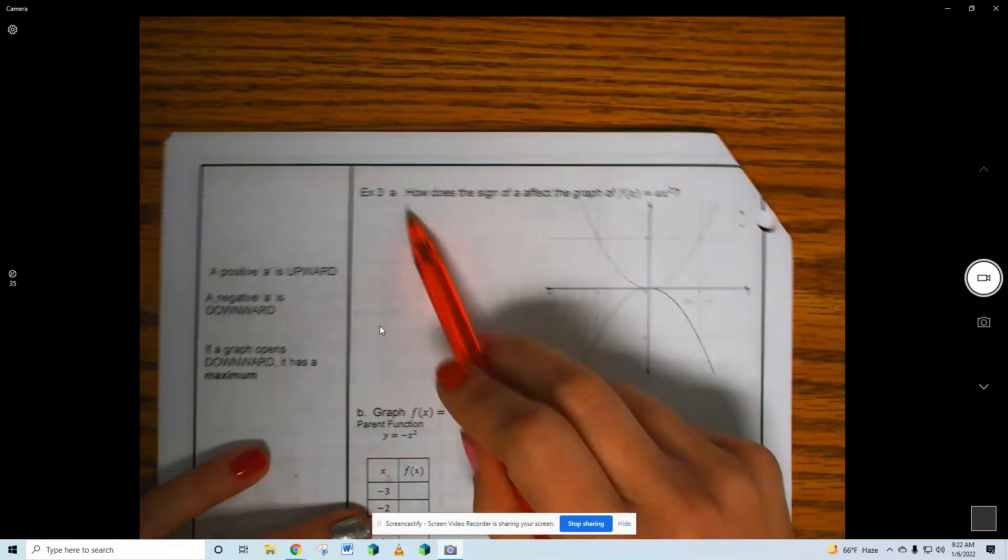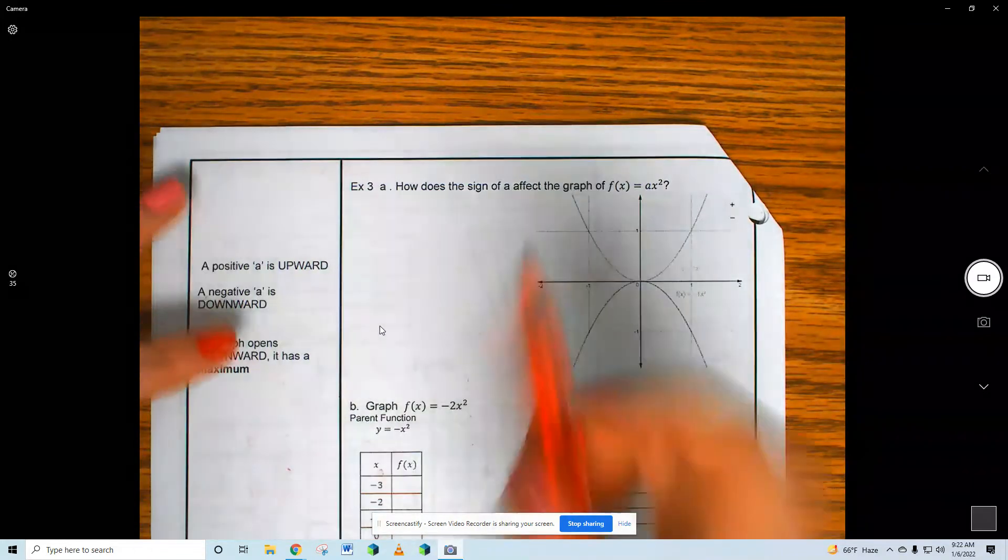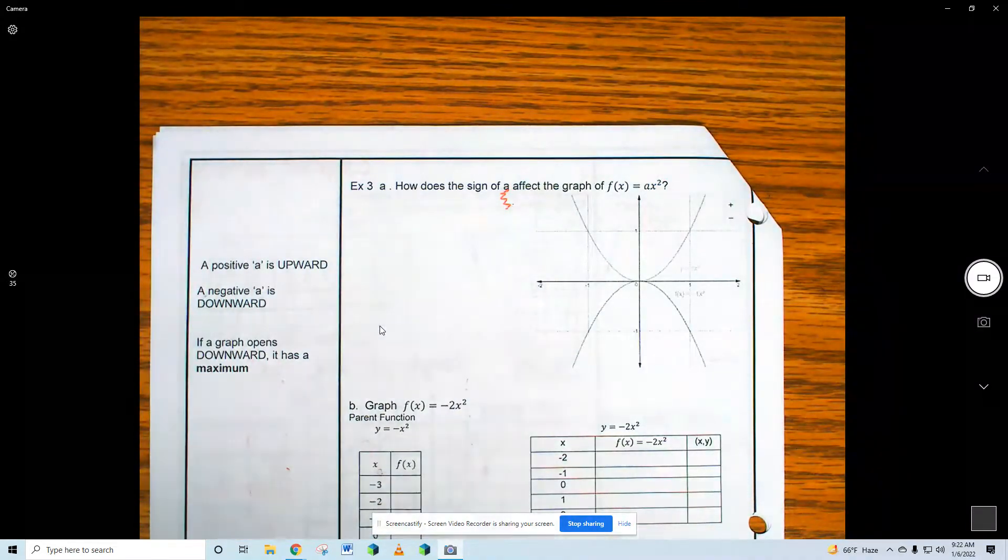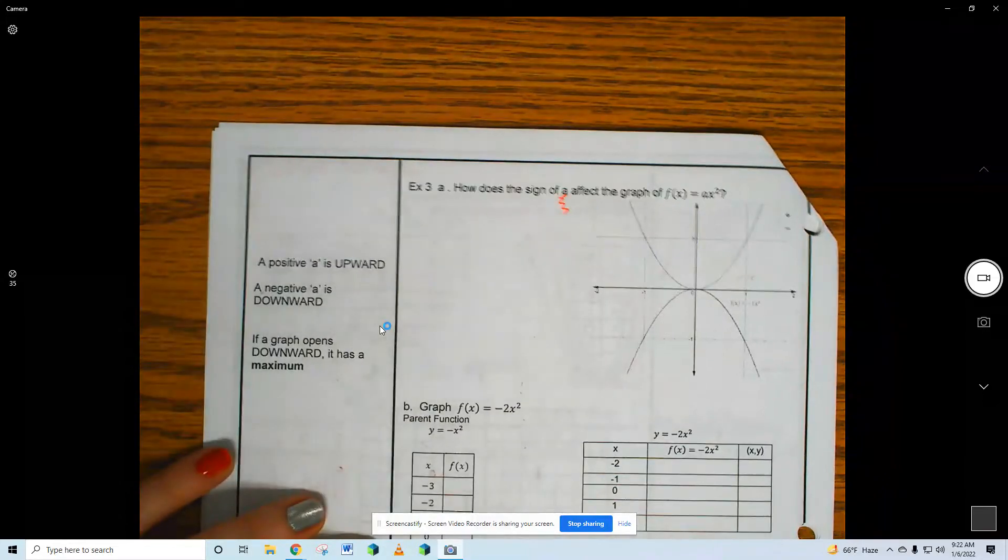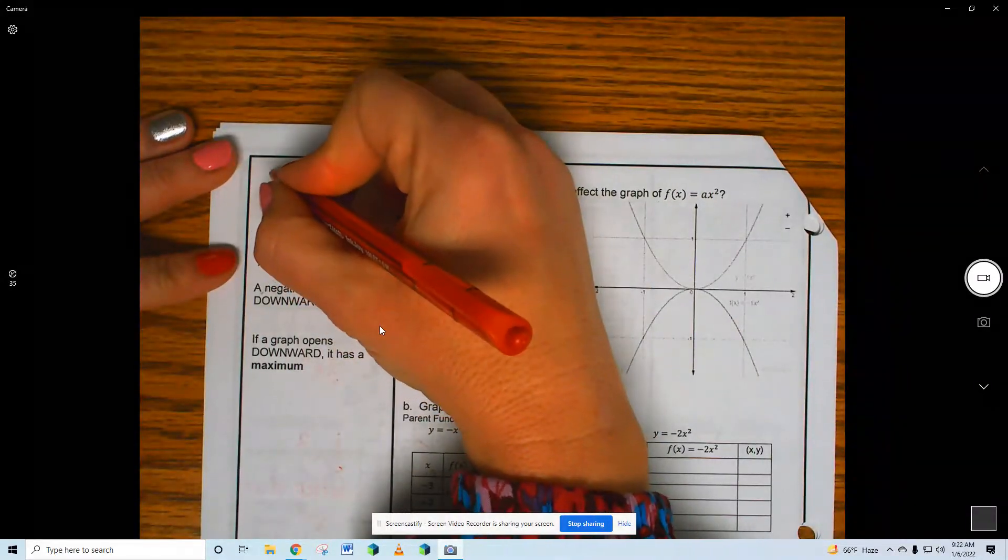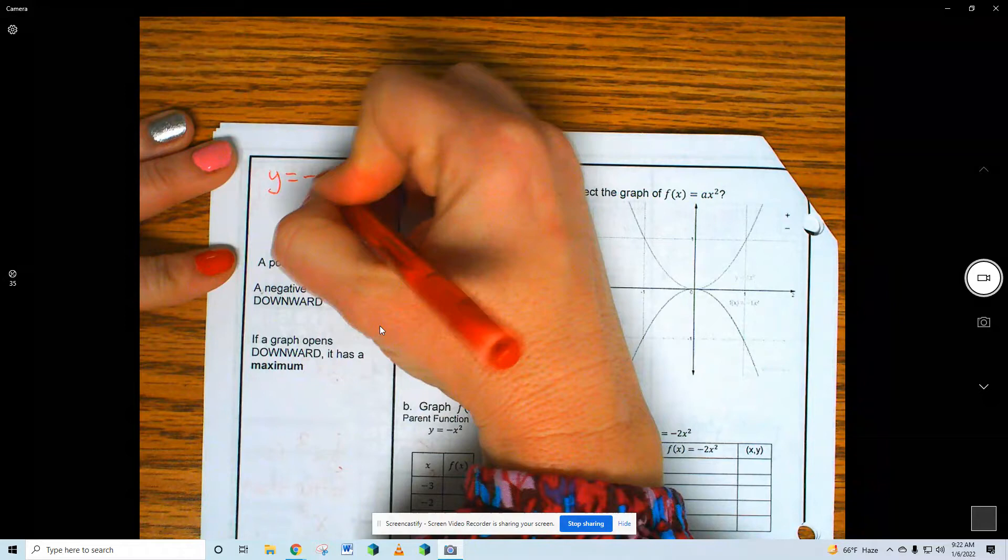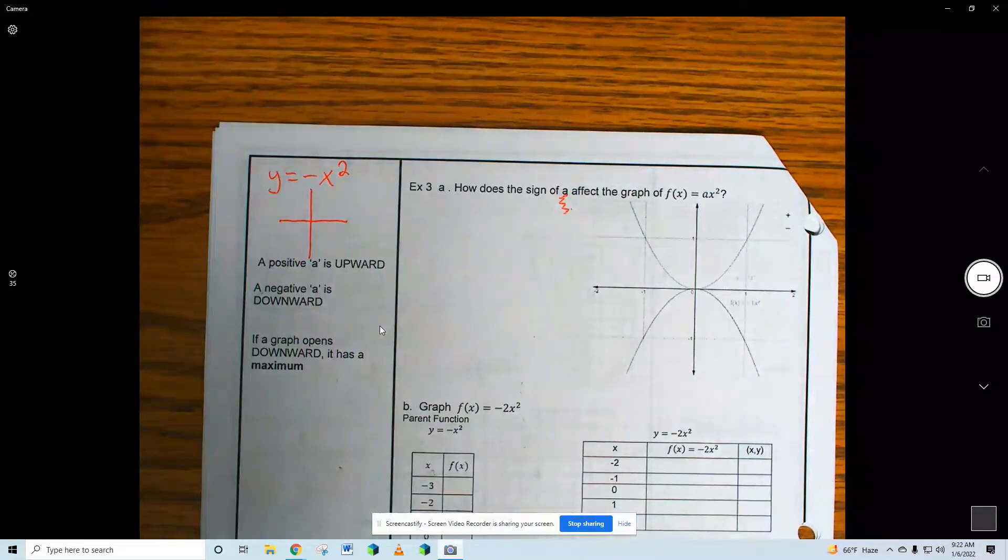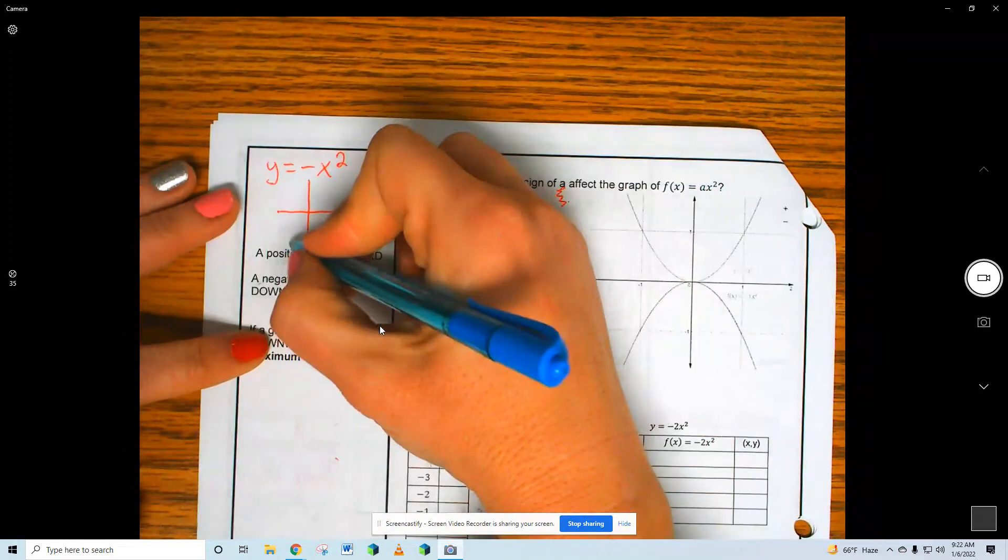So, example three says, how does the sign of A affect the graph? Well, let's draw little pictures. If I have Y equals negative X squared, that's going to be a graph that looks like this. Downward parabola.